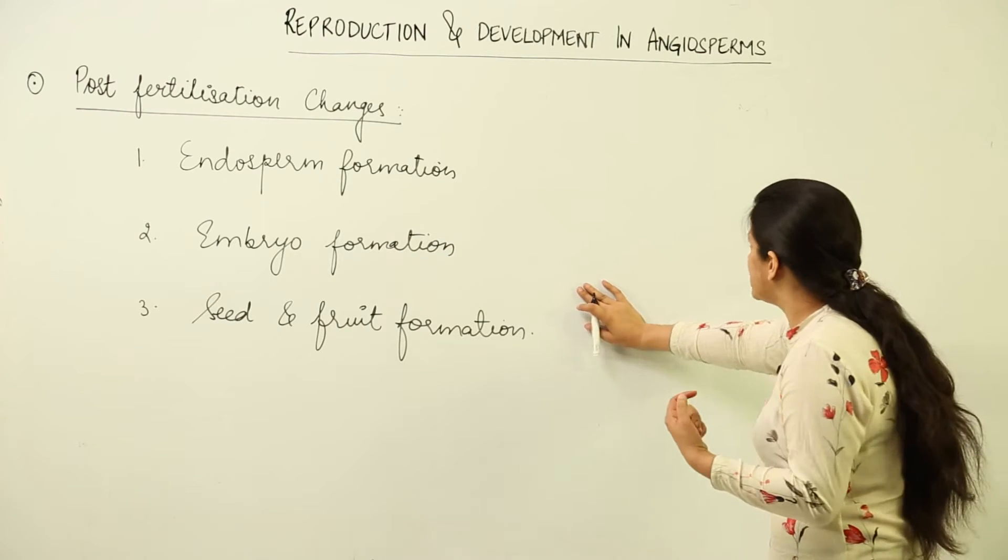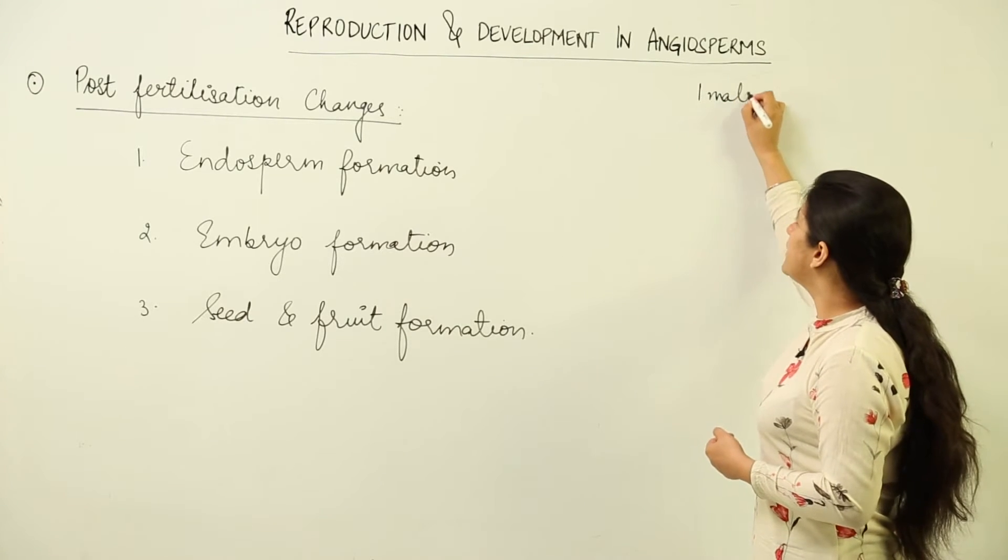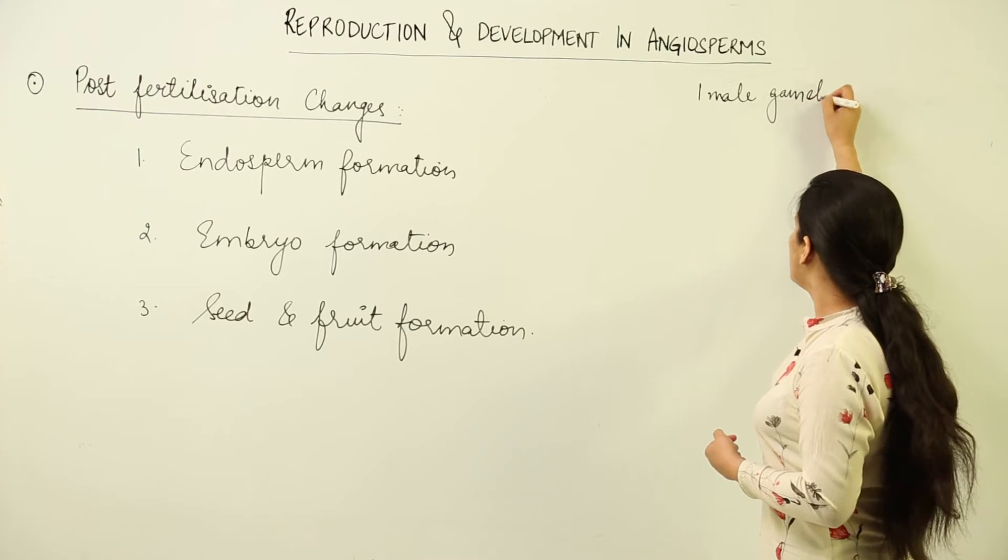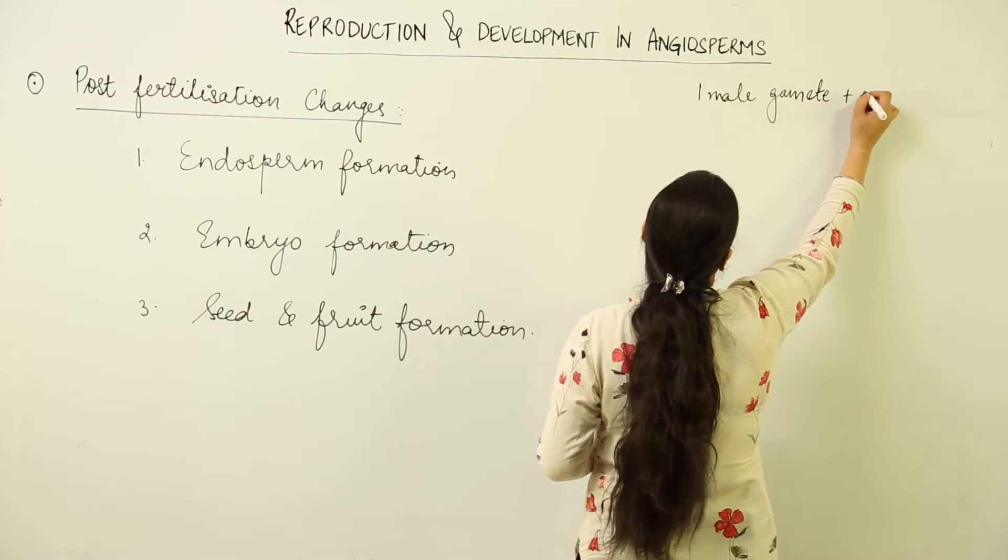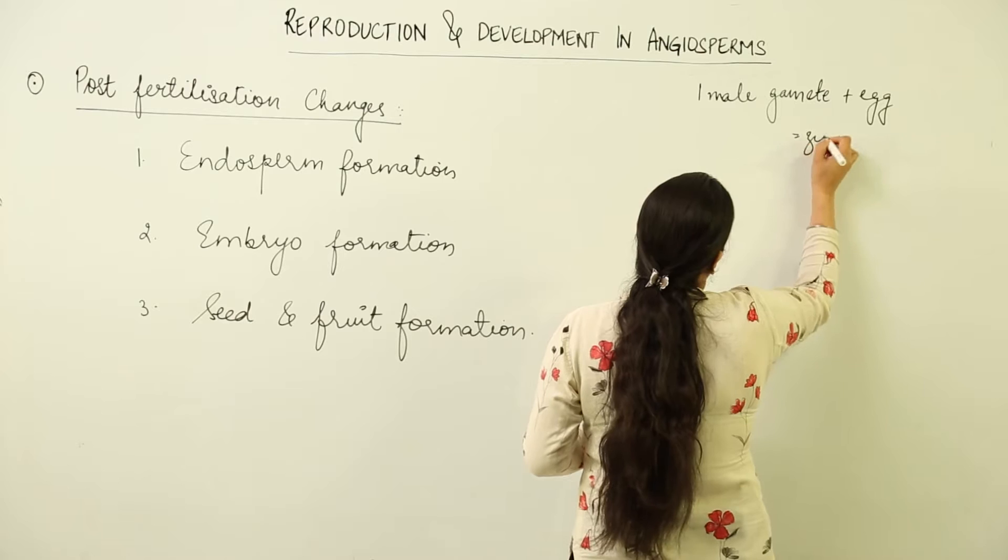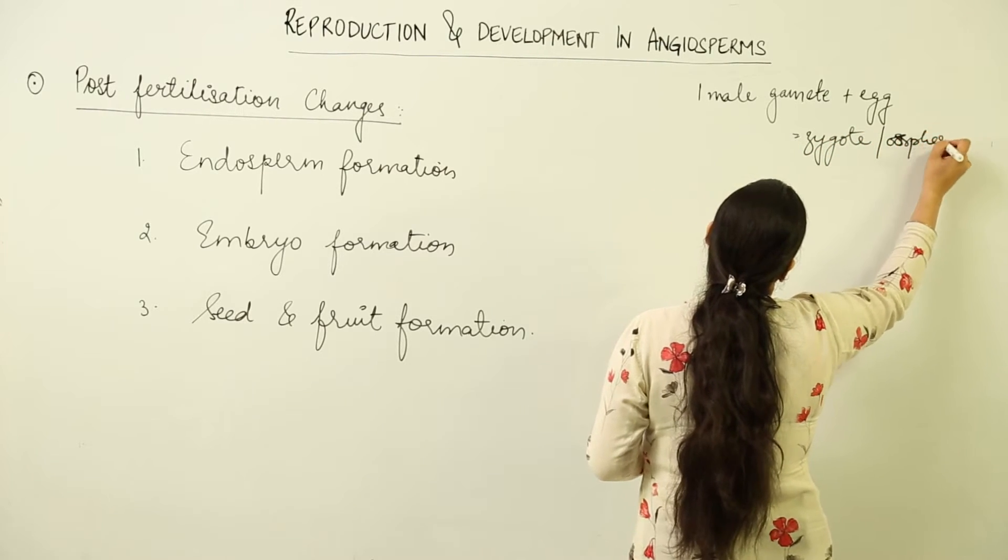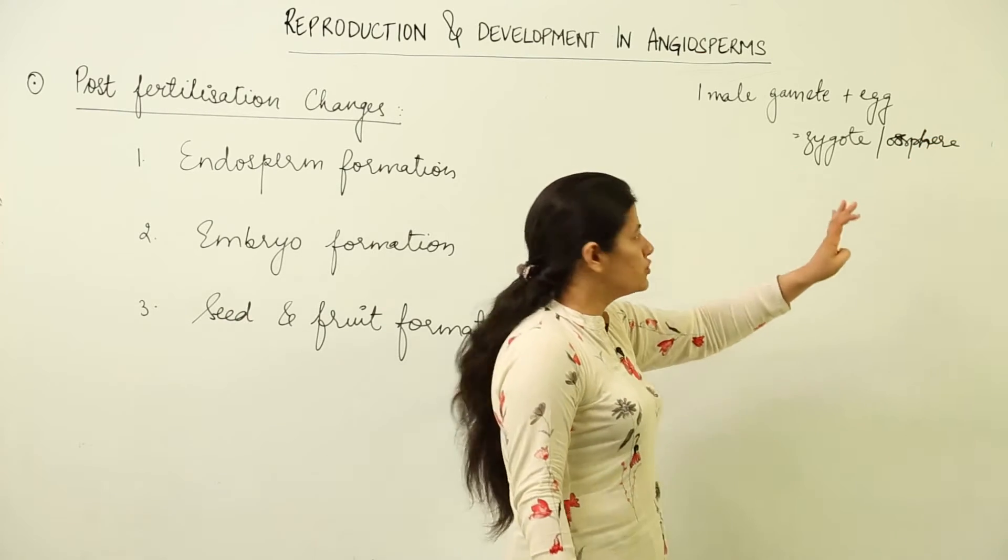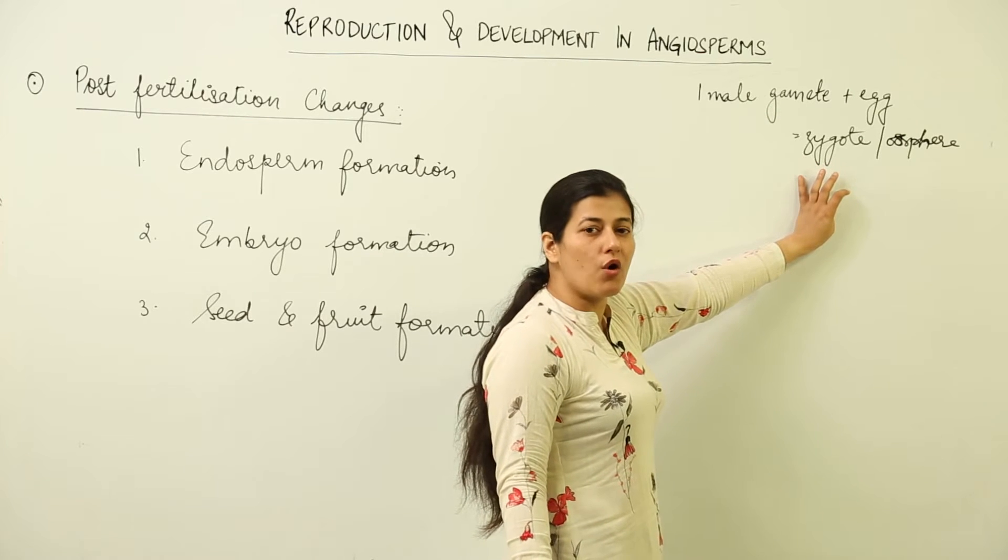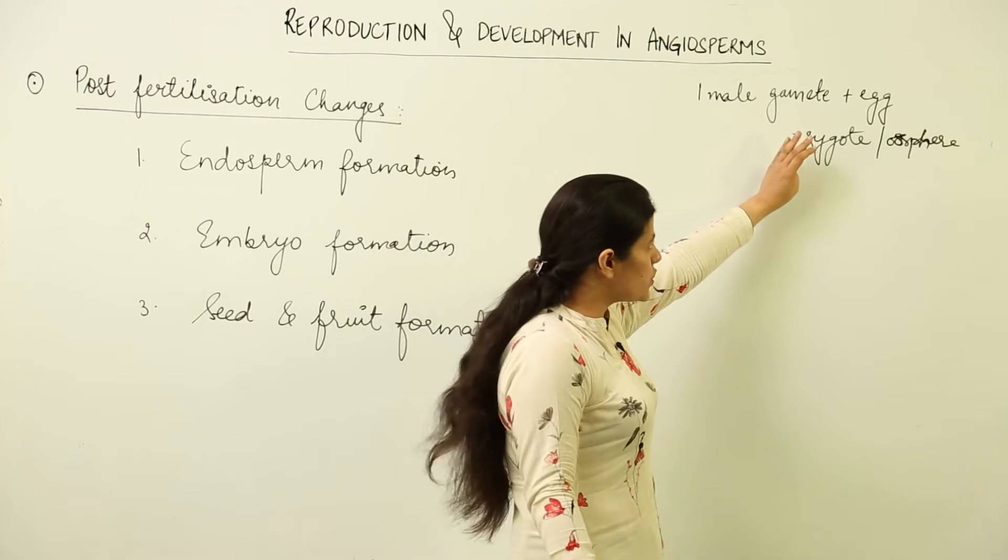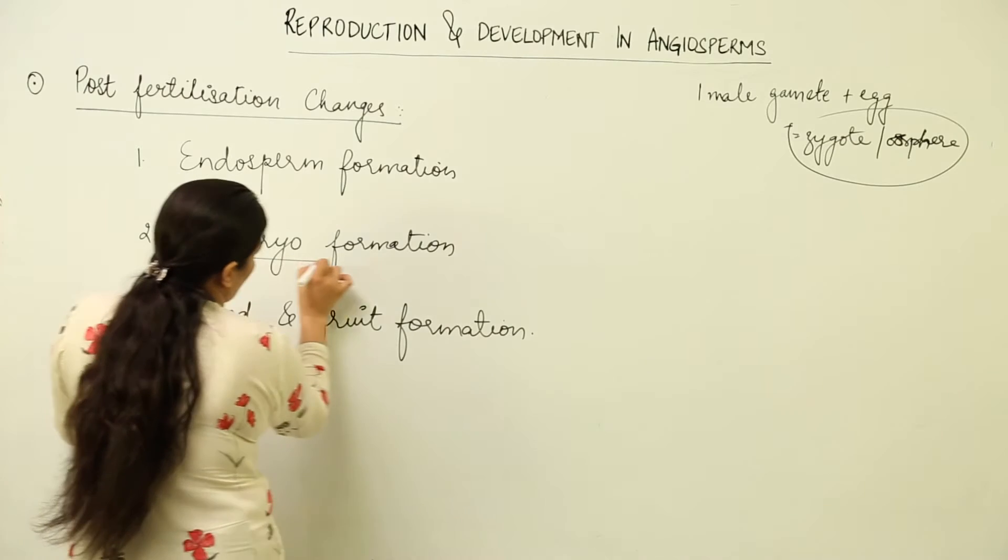There is fusion of one male gamete with the female egg to give rise to zygote. Another term is oosphere, but you can just use zygote. This zygote later on forms the embryo, so we are going to trace the development of zygote into the embryo.